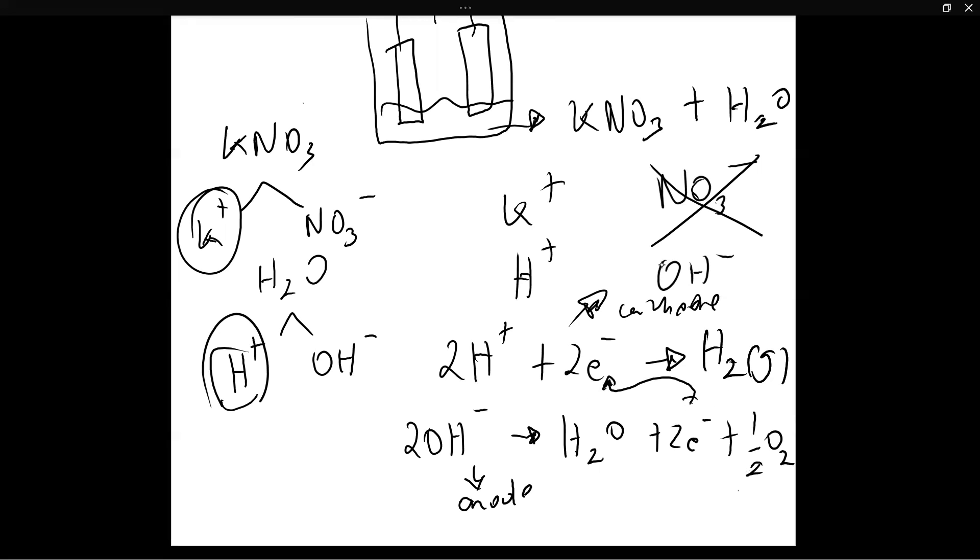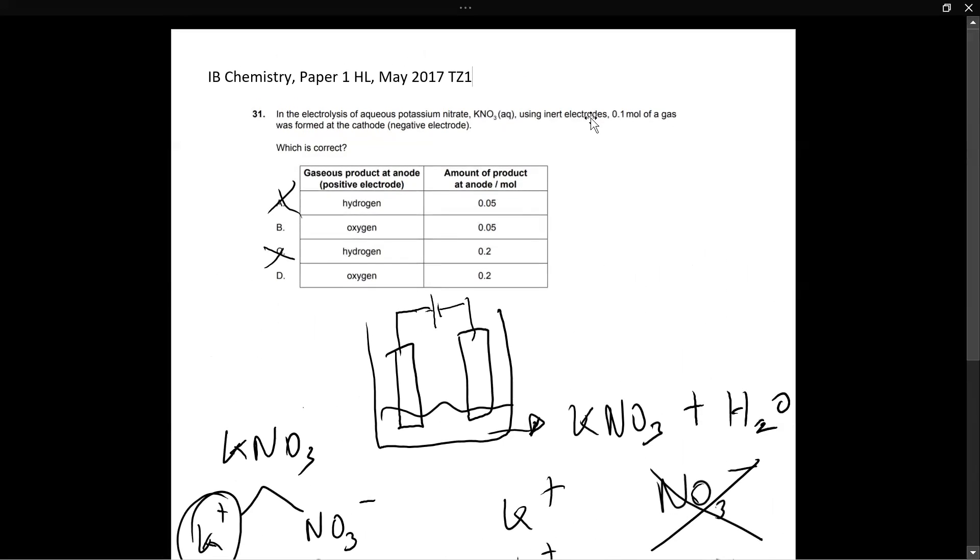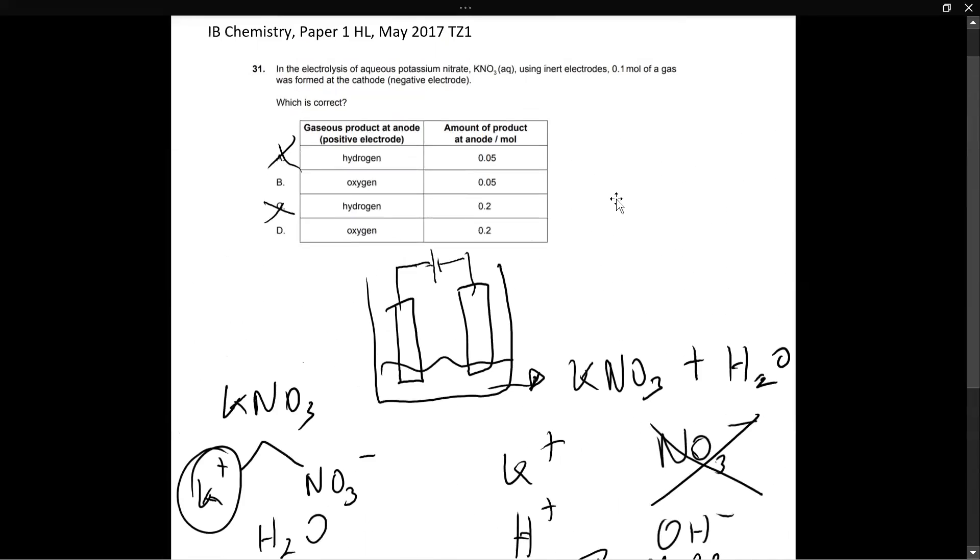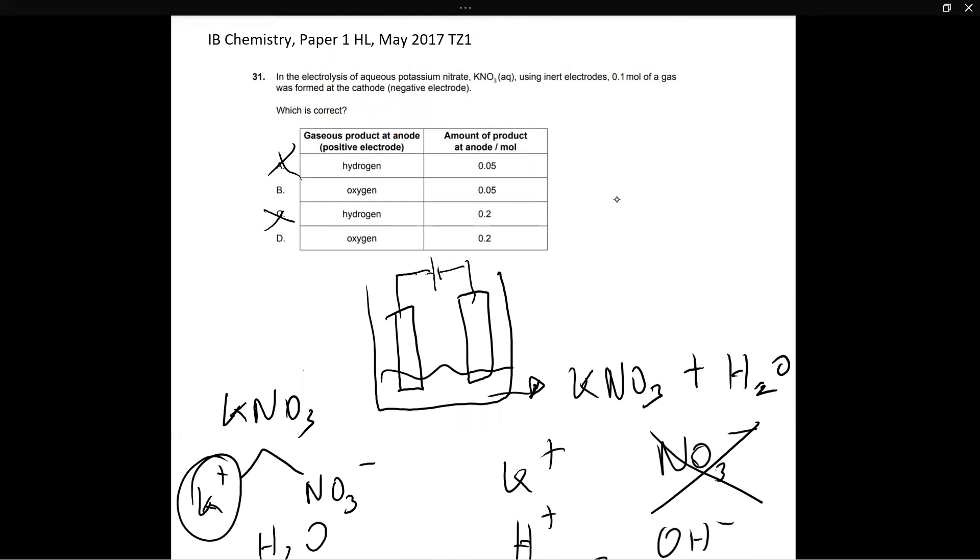Hopefully you can see the relationship over here. So when they say that 0.1 mole gas was formed at the cathode and we know that the gas is hydrogen, we can automatically deduce that half of that will be produced at the anode and that will be oxygen gas. So 0.1 divided by two is 0.05. So we can eliminate option D and B is our correct answer. Oxygen is produced at the anode and the amount in moles is 0.05.